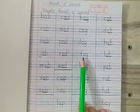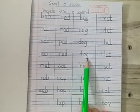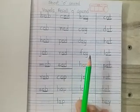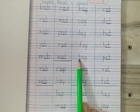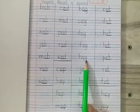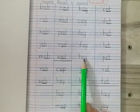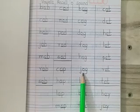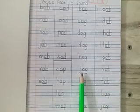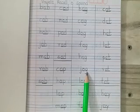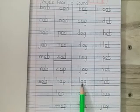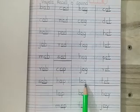F says F, O says O, G says G — Fog. H says H, O says O, G says G — Hog. J says J, O says O, G says G — Jog. L says L, O says O, G says G — Log.